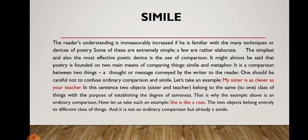One should be careful not to confuse ordinary comparison and simile. For example, 'My sister is as clever as your teacher' — in this sentence, two objects, sister and teacher, belong to the same class of things, with the purpose of establishing the degree of sameness. That is why this is an ordinary comparison. Now, 'She is like a rose' — the two objects belong to entirely different classes of things, and this is already a simile.